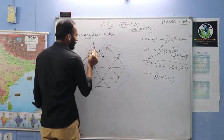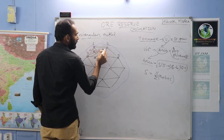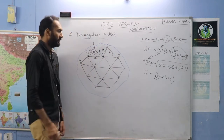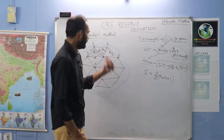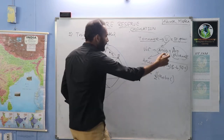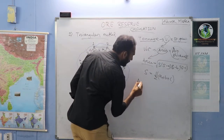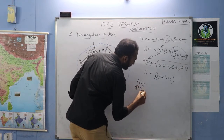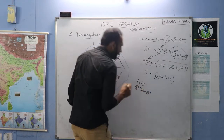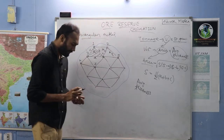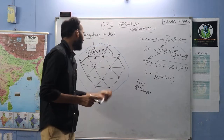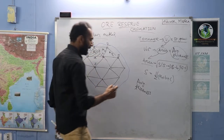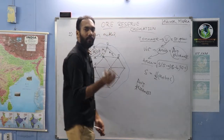So you will have area 1, area 2, area 3, and so on. Then you have to find the average thickness. The average thickness calculation here is somewhat different from the grid pattern method.